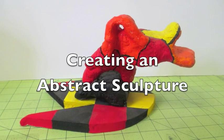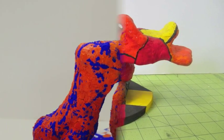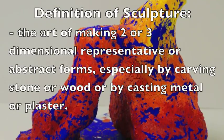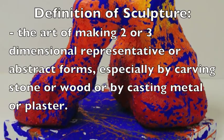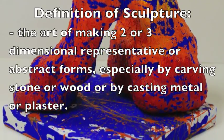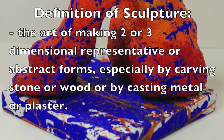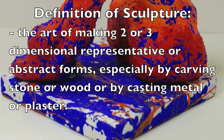Creating an Abstract Sculpture. Sculpture: the art of making two or three-dimensional representative or abstract forms, especially by carving stone or wood or by casting metal or plaster.